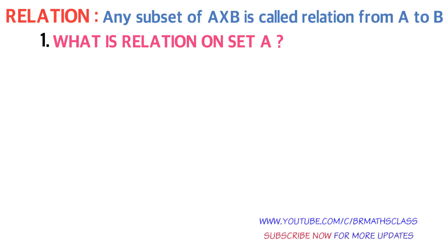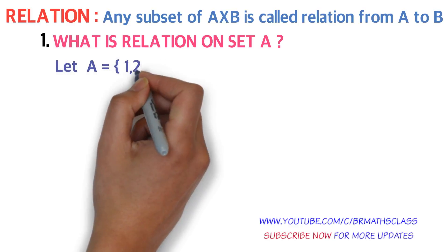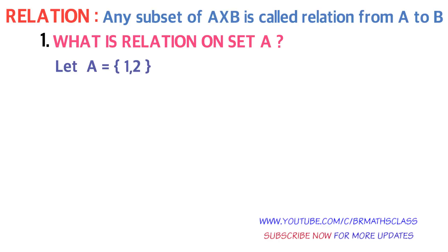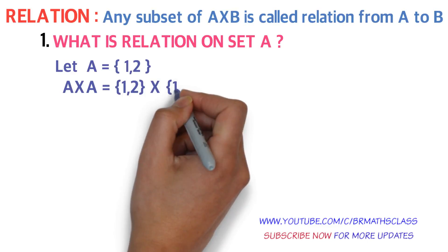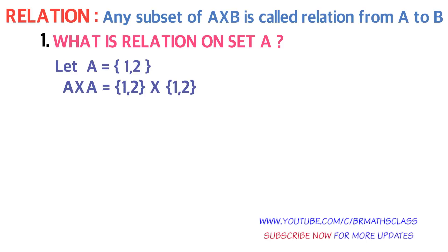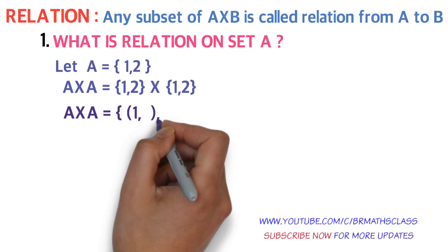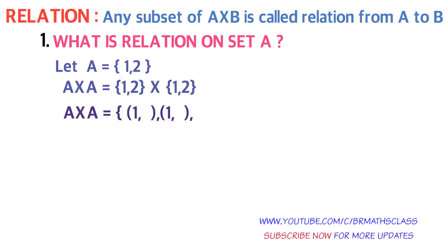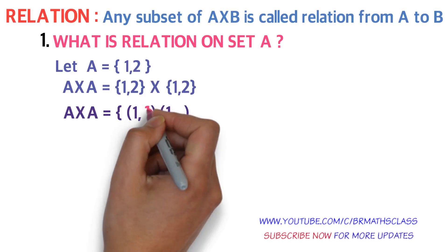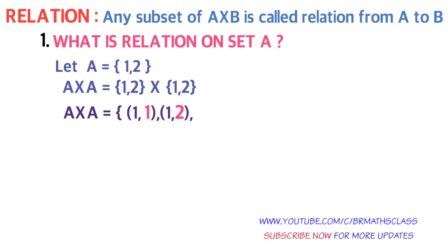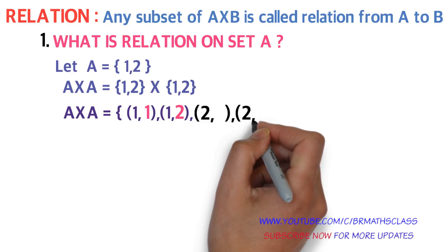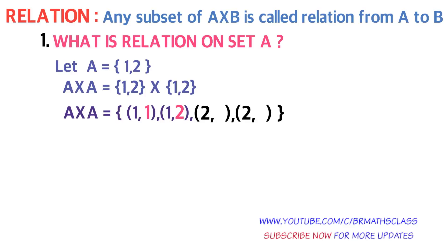I will explain this with an example. Consider a set A. A×A is calculated by taking the first element in the first set and pairing it with all elements of the second set. You take element 2 in the first set and pair with all elements of the second set: ordered pair (2,1) and ordered pair (2,2). I have taken set A and calculated A×A.